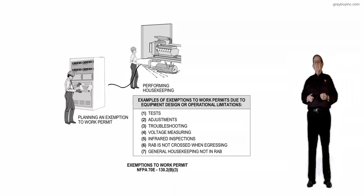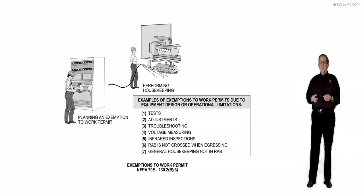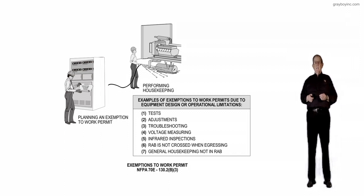You see at the very top where it has the illustration of the person performing housekeeping. They're to stay out of what would be called the restricted approach boundary if they're doing what that individual's doing.